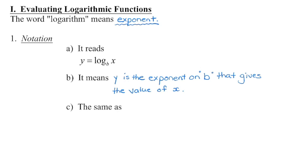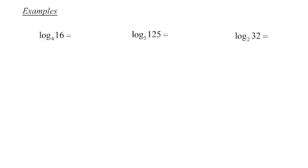So this statement: y is the exponent on base b that gives us the value of x. Looking at our first example, you're going to say to yourself: the exponent we put on base 4 to get a value of 16 is what? The exponent on base 4 that gives us 16 is 2. So that's the solution.